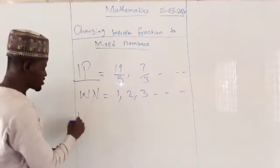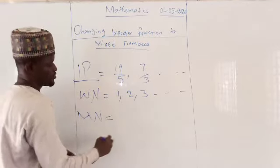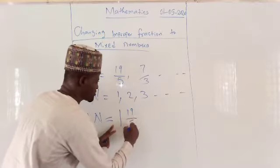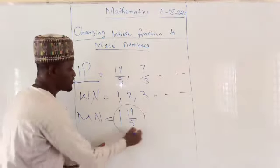So when we are talking of a mixed number, MN is a whole number coming together with an improper fraction. Something of this form. Here is an example of a mixed number.